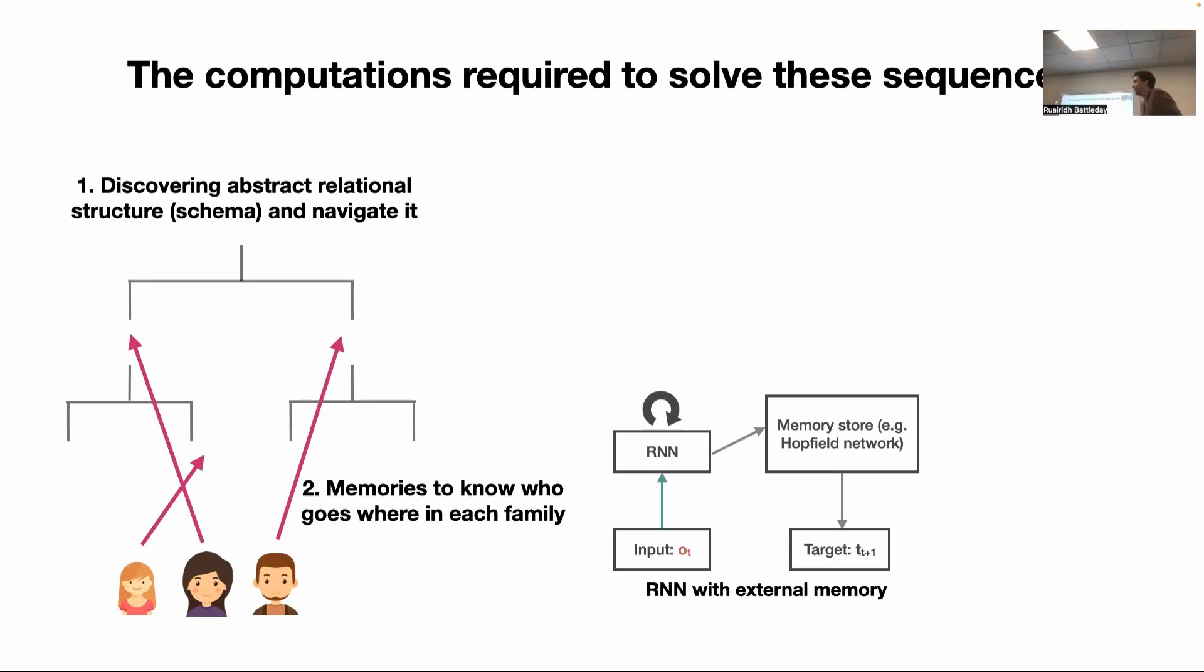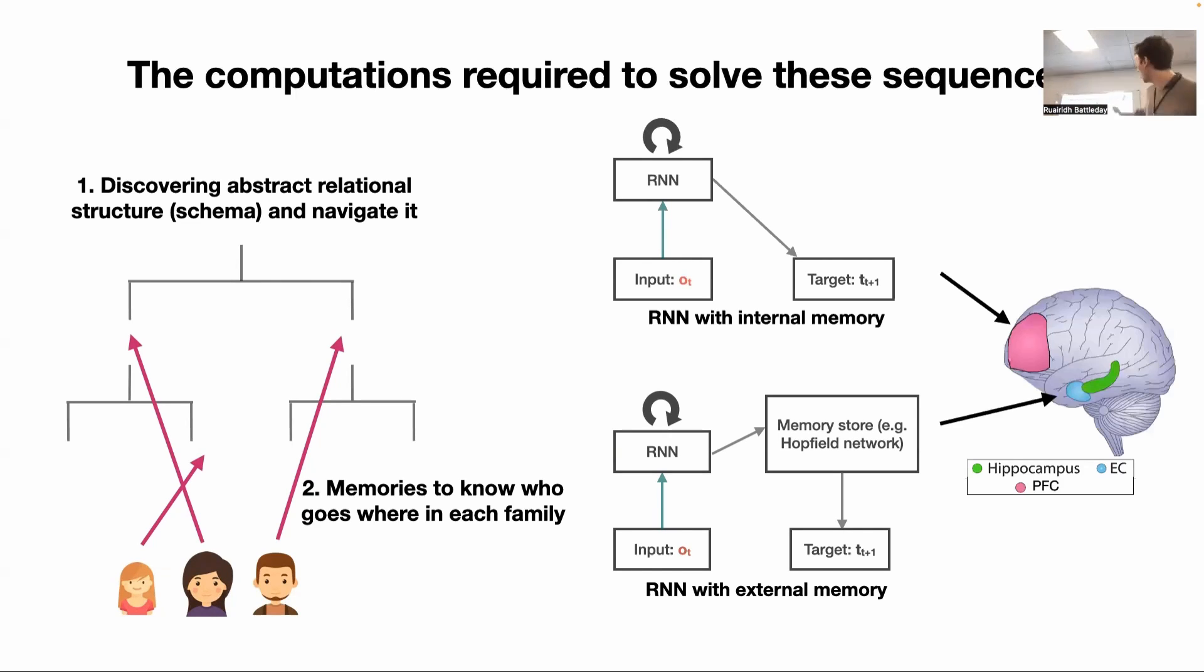There's two components: understand this relational thing, be able to navigate it, plus have a memory. So that speaks to a possible model that might be able to do this. You can bind together some RNN, a recurrent network which we know solves sequences, with some sort of memory store which can store memories. That's of course not the only way you can solve this puzzle. You could just solve it with an RNN, for example, which can walk around, can understand sequences, and it has its own internal memory as well in the dynamics of the RNN and the hidden state of the RNN. So these are two possible algorithms or two possible methodologies you might use to capture this phenomena.